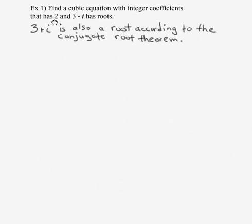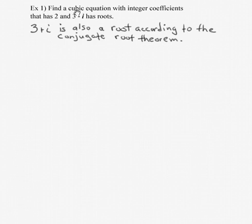Now we're going to take all of those theorems and put them together to find solutions to polynomials. We'll work backwards as we did in a previous section. We know that 2 and 3 minus i are roots. From the conjugate root theorem for complex numbers, complex roots occur in conjugate pairs, so 3 minus i being a root means 3 plus i must also be a root. That gives us 1, 2, 3 answers — good, because we're looking for a cubic equation of degree 3.